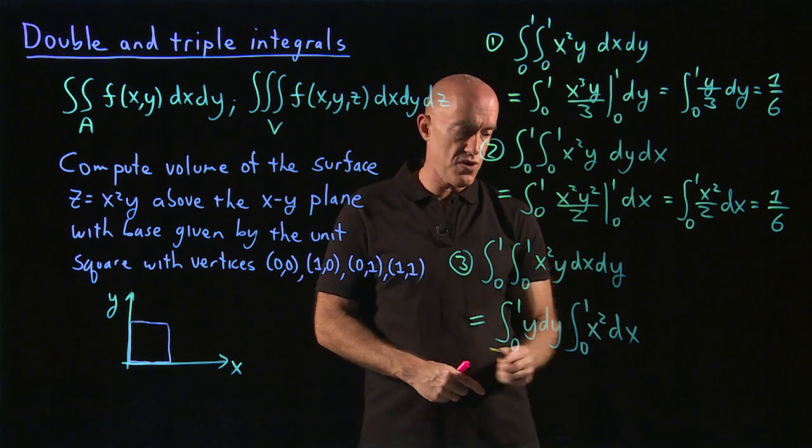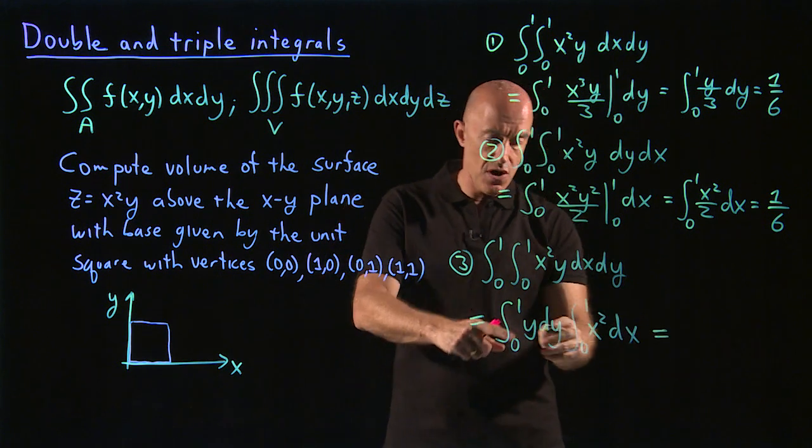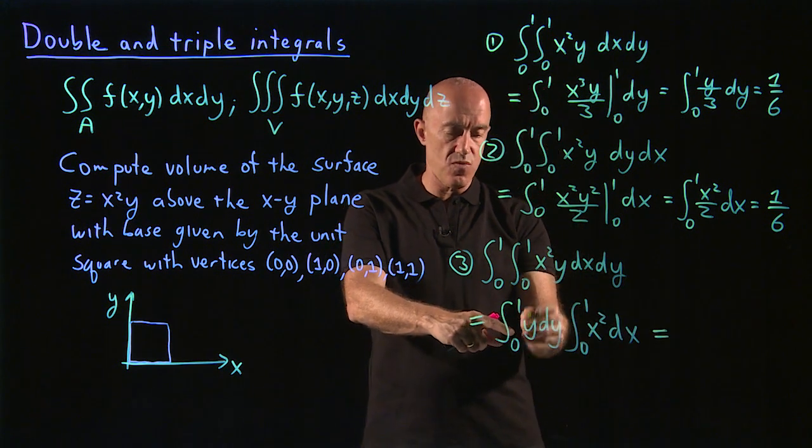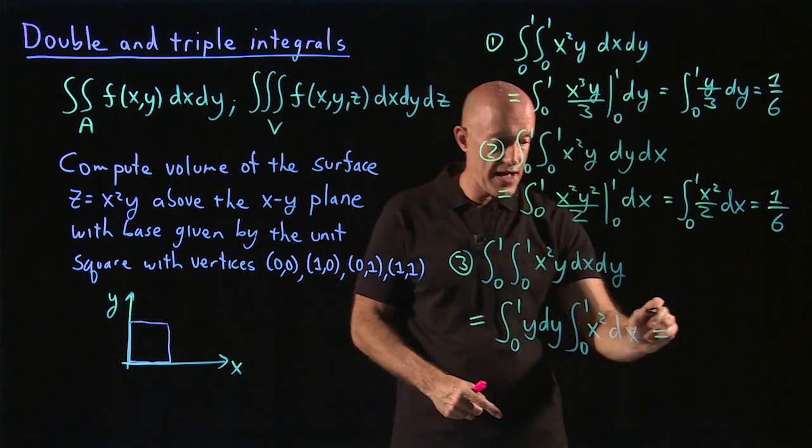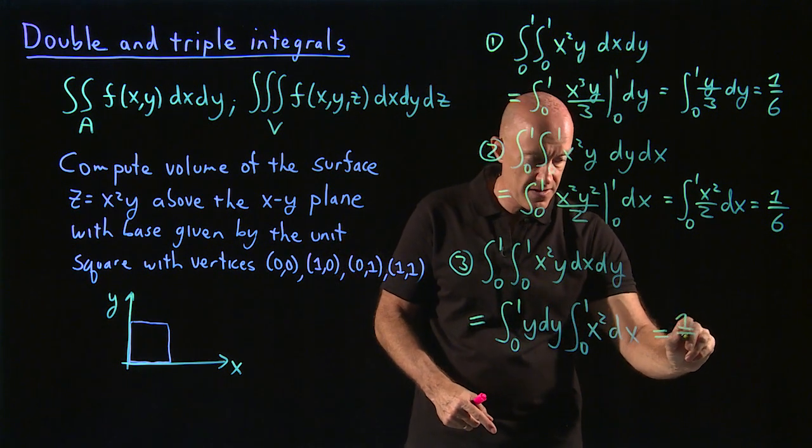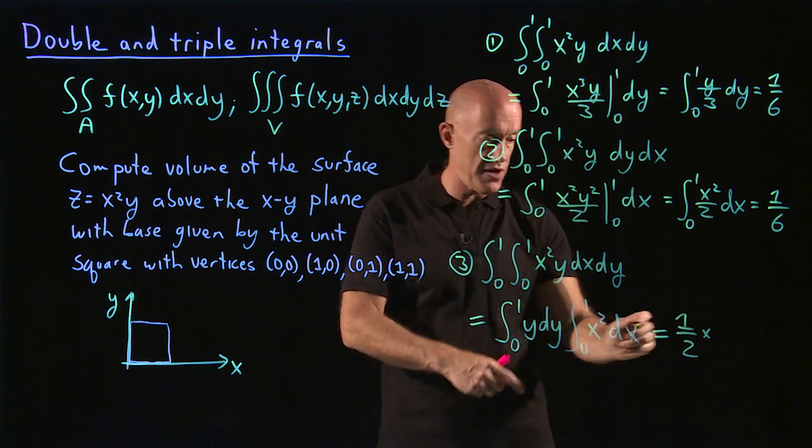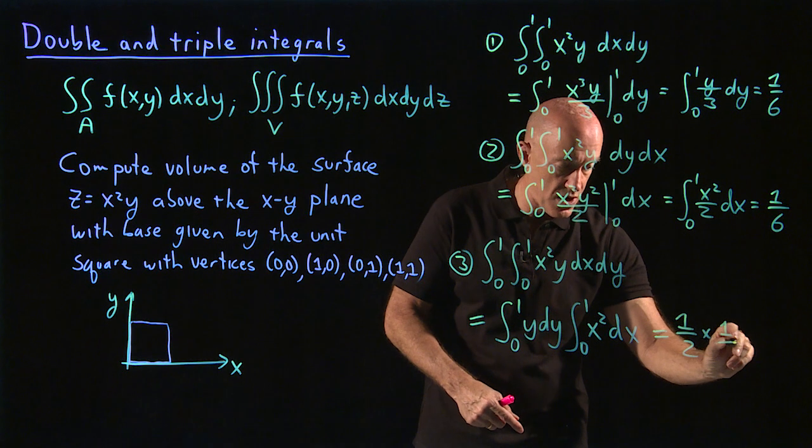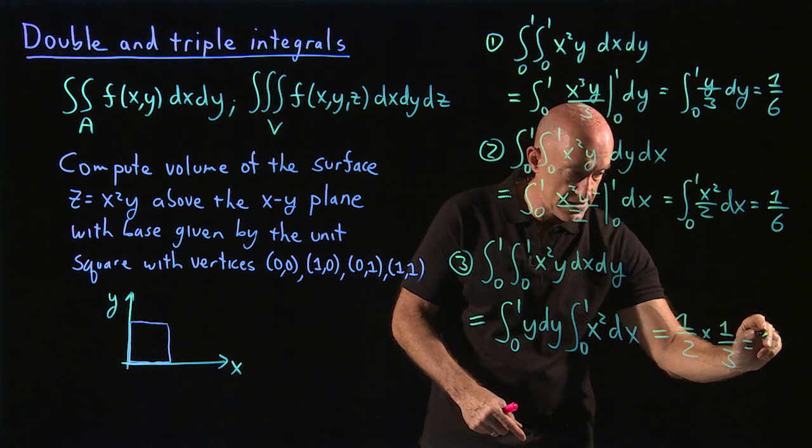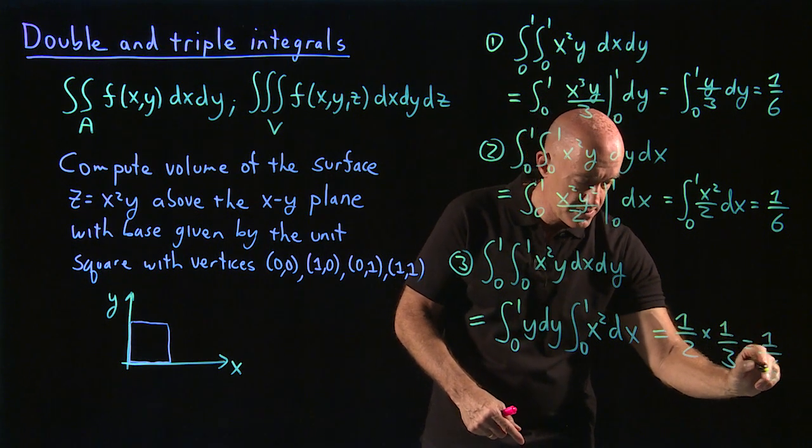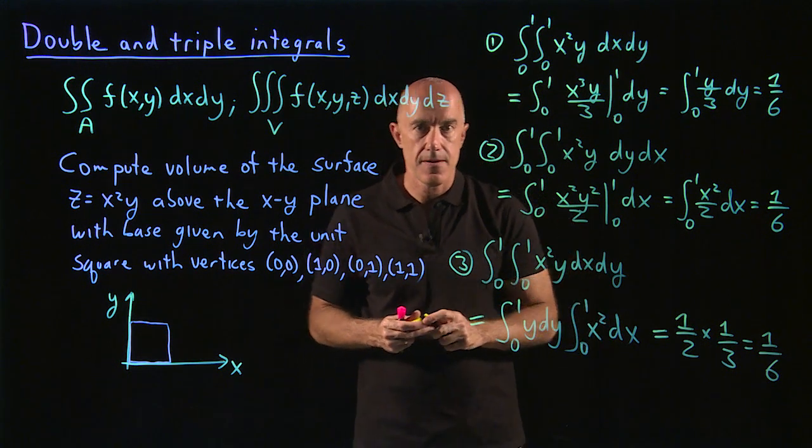So this would be my choice. So the integral of y dy is y squared over 2. So that would give us 1/2 and the integral of x squared dx is x cubed over 3. So that would give us 1/3, which is 1/6 again.